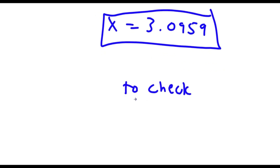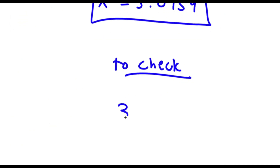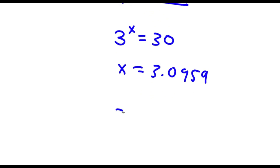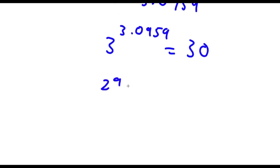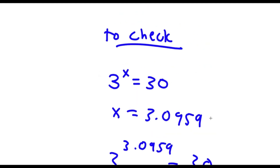Now to check, my original equation was 3 to the power of x is equal to 30. We know that x equals 3.0959, so plugging this in I have 3 to the power of 3.0959 is equal to 30. Now 3 to the power of 3.0959 equals 29.9989, which is approximately 30. So 30 equals 30, meaning our solution is correct.